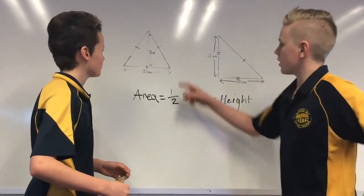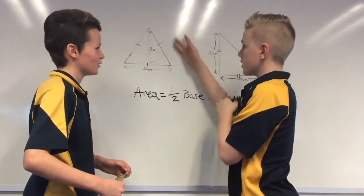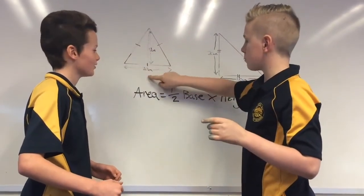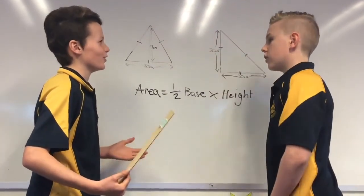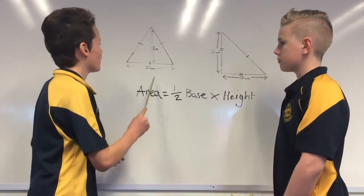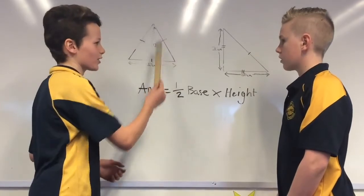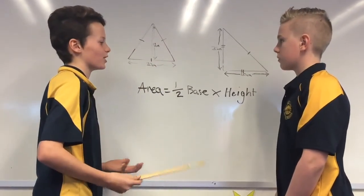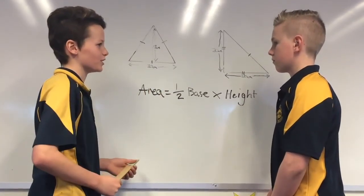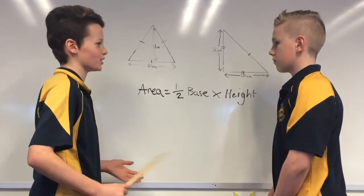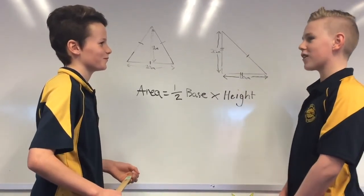But this one over here is an equilateral triangle — 20 centimetres, 20 centimetres, 20 centimetres. So it must be 10 centimetres times 20 centimetres? No, you're wrong. For this you have to use the height, not the length. The height is 17 centimetres, not 20. So you do 10 times 17 centimetres — it's 170 centimetres squared. Now I know how to work out the area of a triangle.